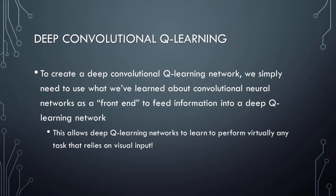Finally, we just need to connect all of these ideas to deep Q-Learning. To create a deep convolutional Q-Learning network, we simply use what we've learned about convolutional neural networks as a front-end to feed information into a deep Q-Learning network. This allows deep Q-Learning networks to use visual information such as images or video frames as input, opening the door to training AI networks to perform tasks such as controlling a self-driving car using cameras, playing video games, analyzing movies or TV shows for inappropriate content, or any other task that relies on visual input.